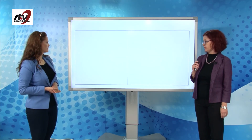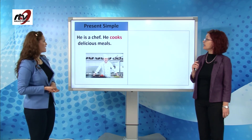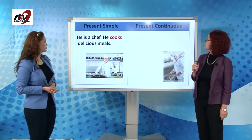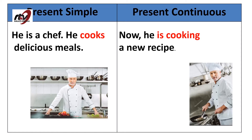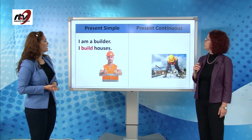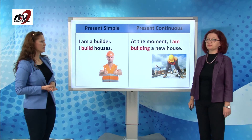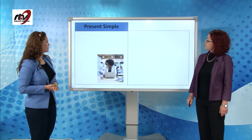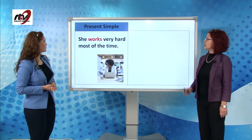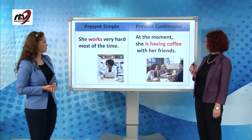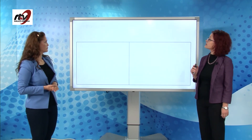Some examples. He is a chef — he cooks delicious meals. Now he is cooking a new recipe. I am a builder — I build houses. At the moment I am building a new house. She works very hard most of the time, but at the moment she is having coffee with her friends.